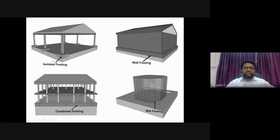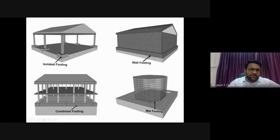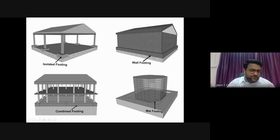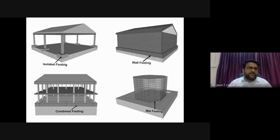Structural elements transfer the load to the subsoil using an intermediate element called footings. If a column is directly transmitted to one small structural element, it is called an isolated footing. When multiple columns are close together and their stress zones overlap, we integrate those footings and call it a combined footing.